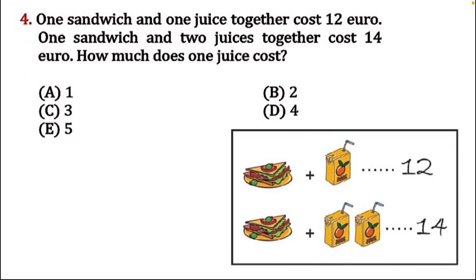Next is question number four: one sandwich and one juice together cost 12 euro; one sandwich and two juices together cost 14 euro. How much does one juice cost? The options are: A is one, B is two, C is three, D is four, E is five. The picture shows a burger plus juice together costing 12, and a burger plus two juices altogether costing 14.